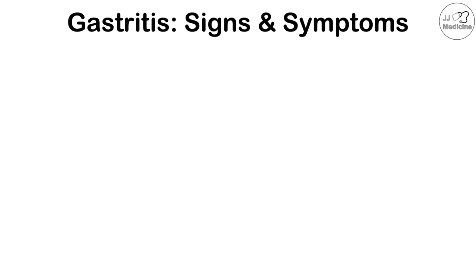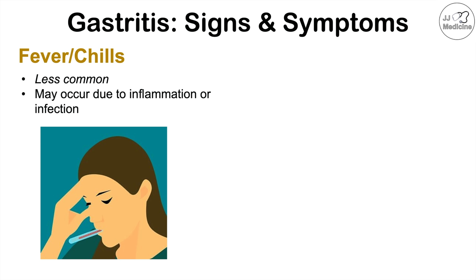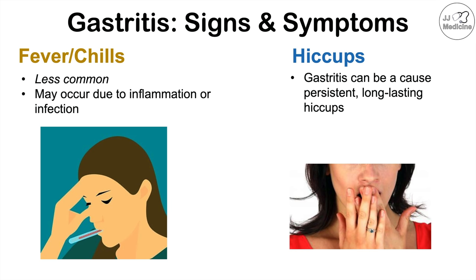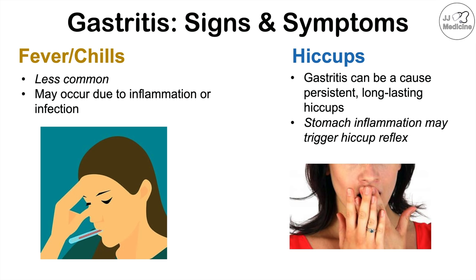Some more rare findings include fever and chills — some patients may have a fever and chills, though this is less common, and it may occur due to inflammation or infection. Another interesting finding is hiccups. Hiccups can actually be a sign of gastritis, especially if those hiccups are persistent and long-lasting. The stomach inflammation may trigger the hiccup reflex. Other gastrointestinal conditions can cause persistent hiccups, but this is one of them.